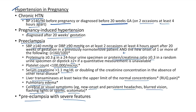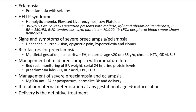Other criteria for severe features: serum creatinine >1.1 mg/dL, liver transaminases twice upper limit, right upper quadrant pain, pulmonary edema, or cerebral/visual symptoms. Eclampsia is preeclampsia with seizures. HELLP syndrome is an acronym for Hemolytic anemia, Elevated Liver enzymes, and Low Platelets.